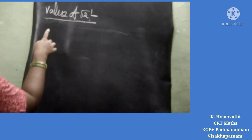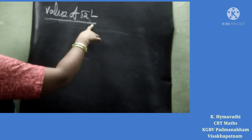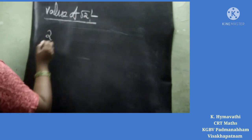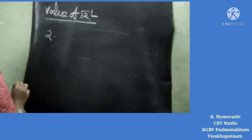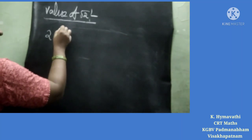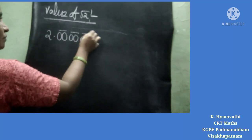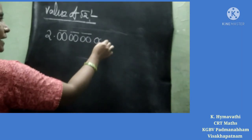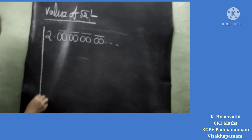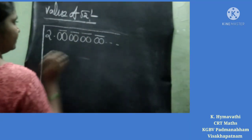Let us find the value of root 2 using the long division method. First, write 2, then put a decimal point, and take zeros in pairs after it. Draw a vertical line and a horizontal line to set up the division.